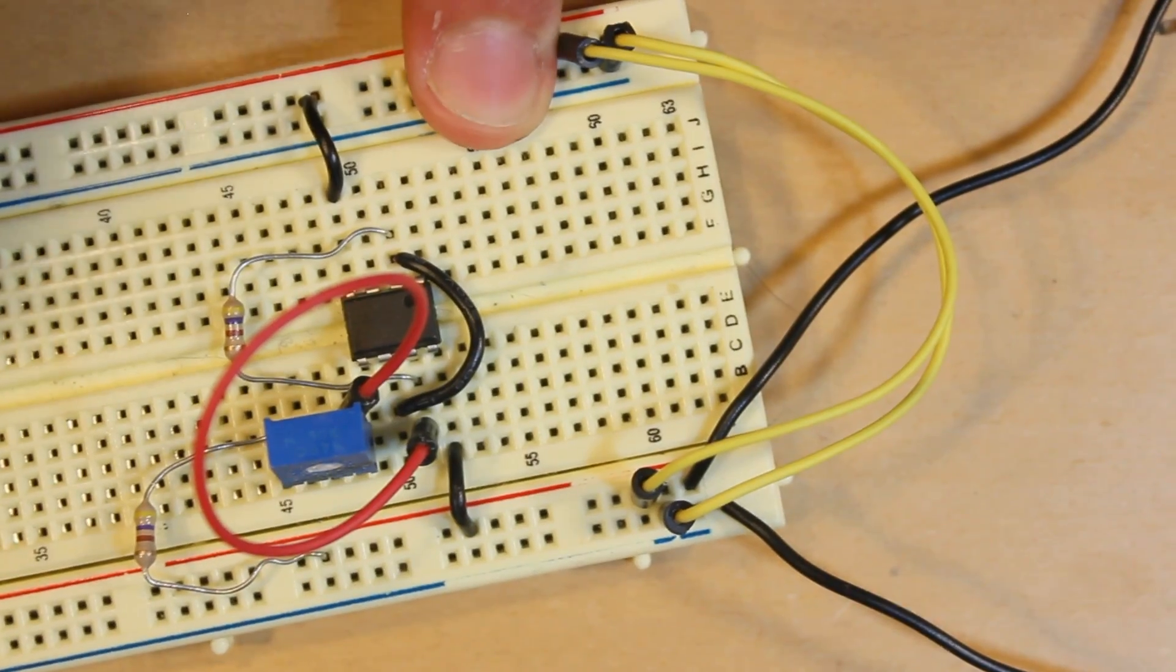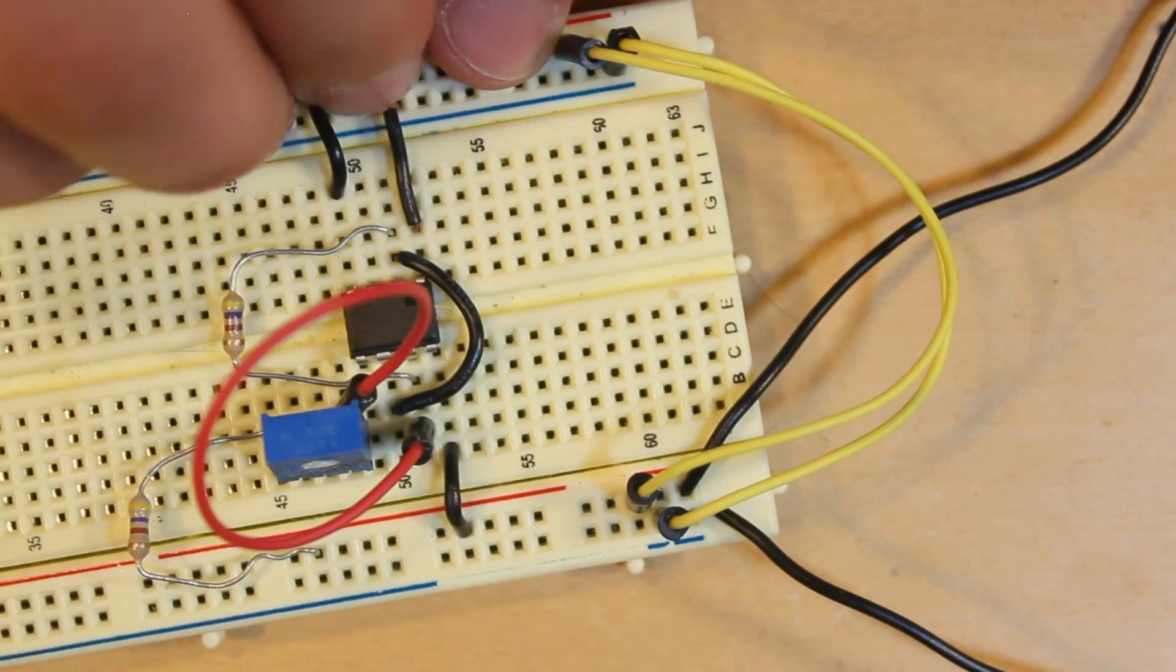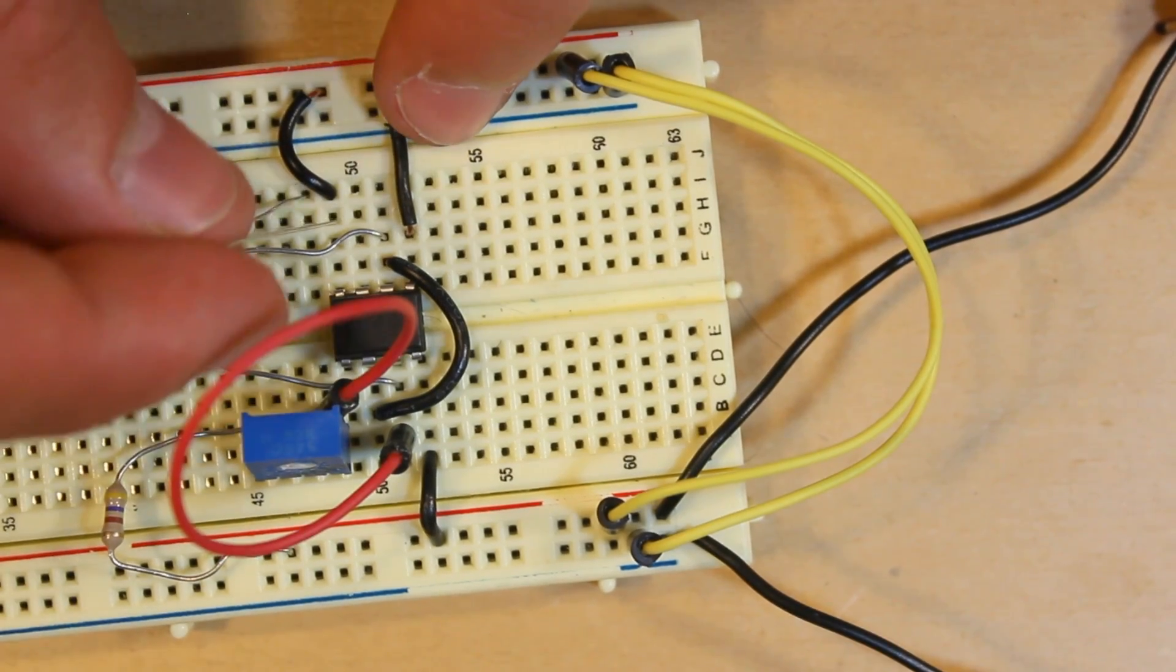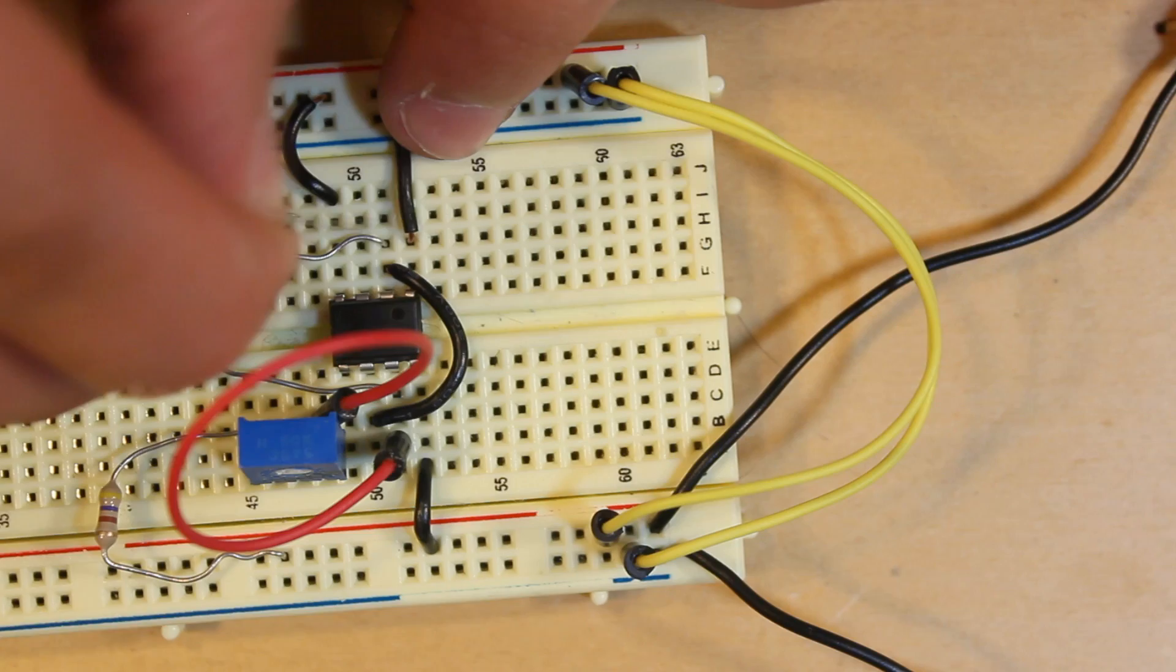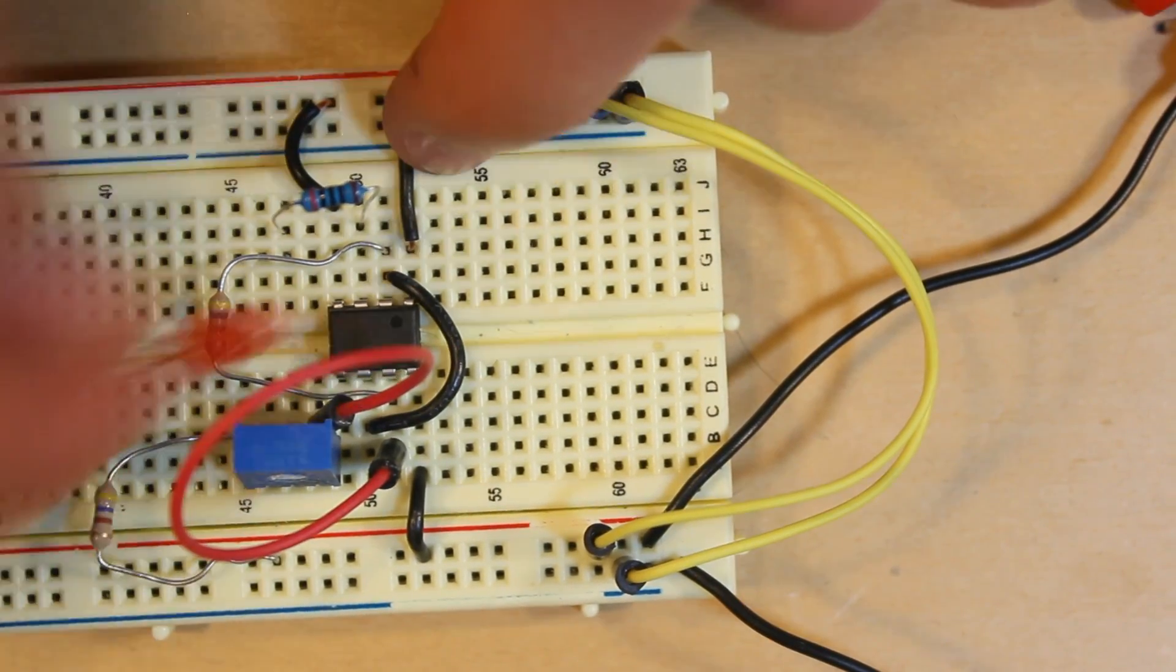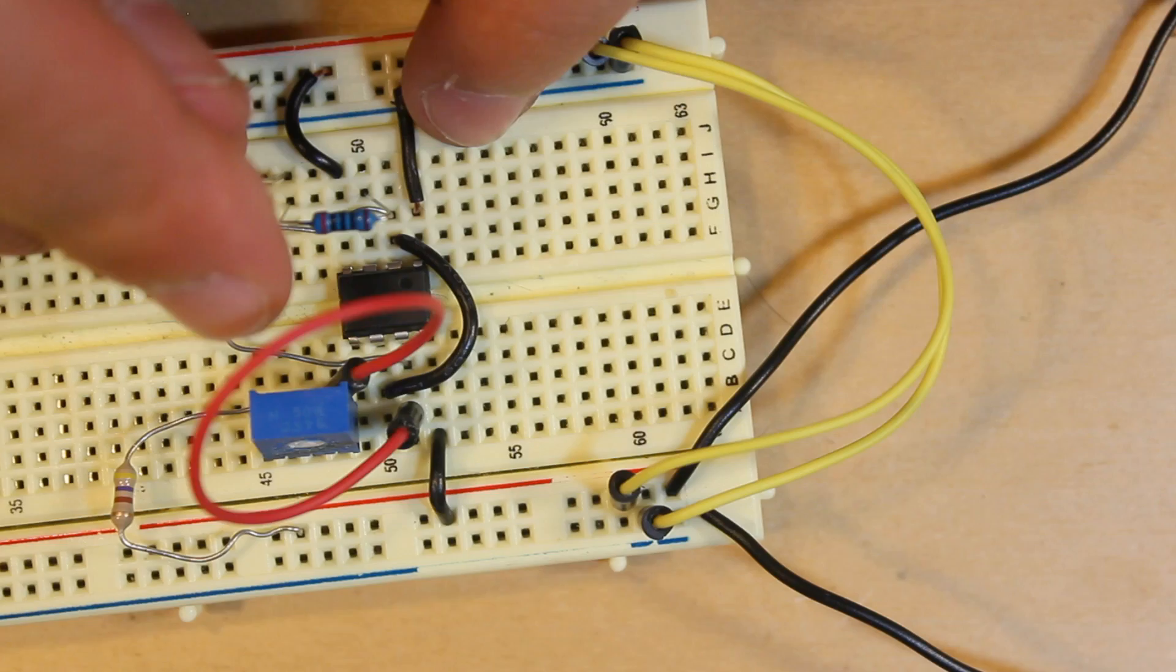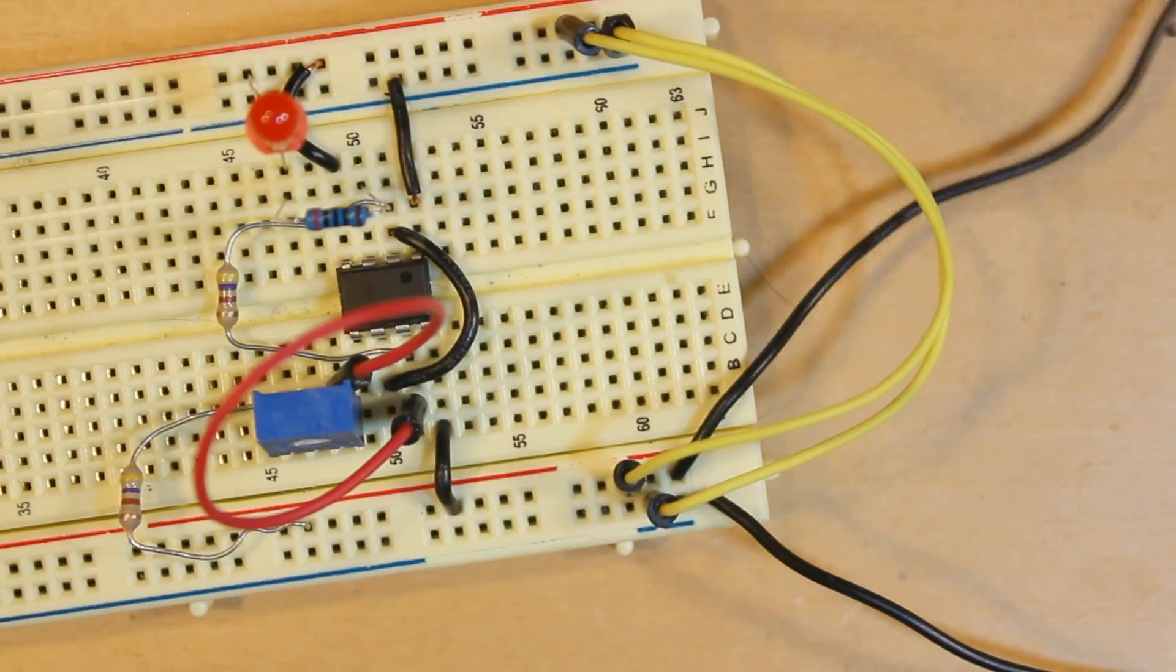Then we're going to take another jumper and connect it from pin 1 into the negative rail. Then we're going to take a 200 ohm resistor for our LED and plug it into pin 3 of the 555 timer. We're going to take our LED and take the negative lead and plug it into the resistor or pin 3 of the 555 timer, and take the positive lead and plug it into the positive rail.